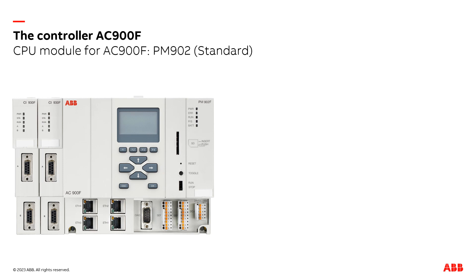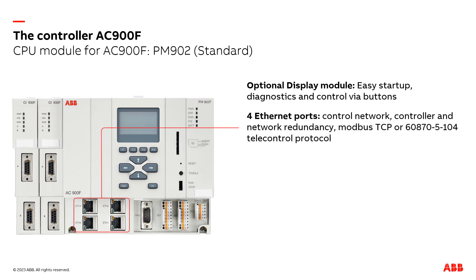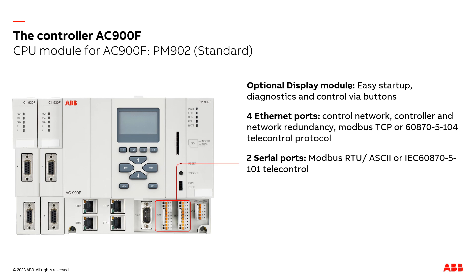The CPU module of the AC900F controller consists of a base unit which can be optionally equipped with a display module. The AC900F contains four Ethernet ports, two serial ports, and two fieldbus slots.